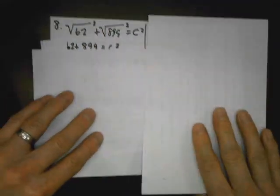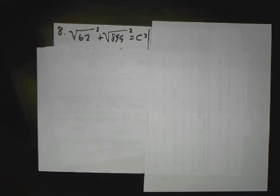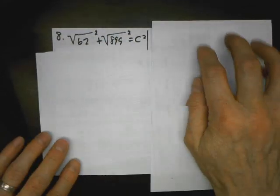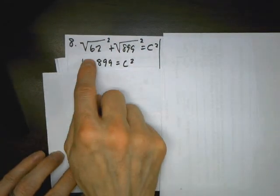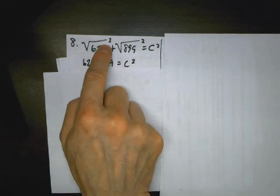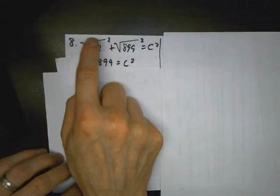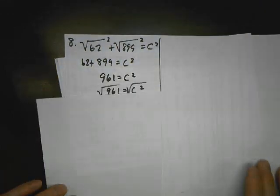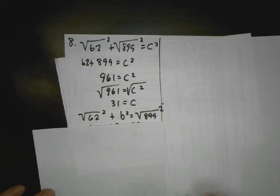So next problem, number 8. They give us two irrational numbers, and they say if these form a right triangle, where are the other two possible lengths? And the reason they say that is because there's two ways you can set this up. You can make them both be legs. So you've got a squared plus b squared equals c squared. We learn in class that the square root of a number, of an irrational number, a square root squared, is just going to become the radicand inside. So when I add those two and take the square root of both sides, we get a perfect square. 31 times 31 is 961.